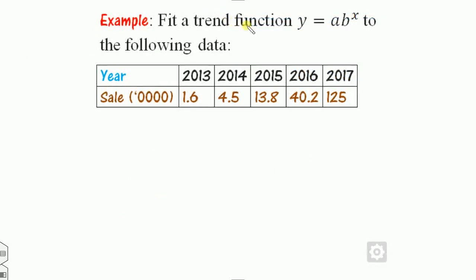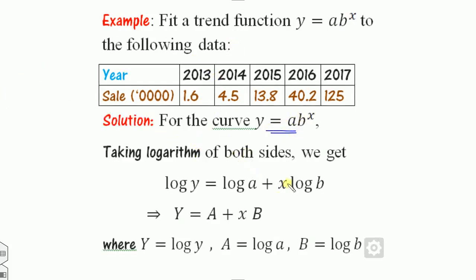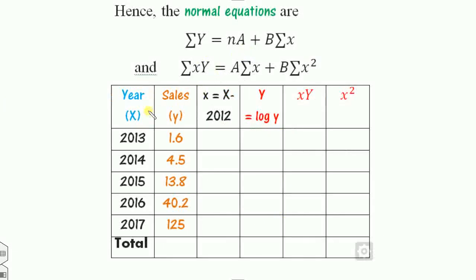Now I explain this with a numerical example. Our task is to fit the trend equation y = ab^x for a given time series from 2013 onwards. Since the curve is non-linear, take the logarithm on both sides to get Y = A + Bx, then write the normal equations — multiply by 1 and multiply by x. X is given and y is given, so to make calculation easier I can redefine x. Here the middle value is 2015, so I can set x as (original year − 2015) as the base.